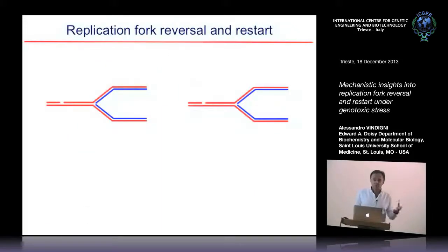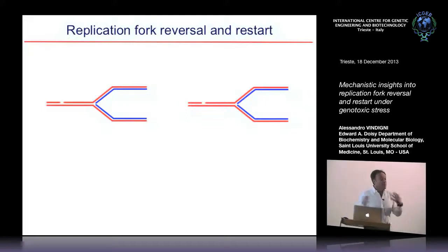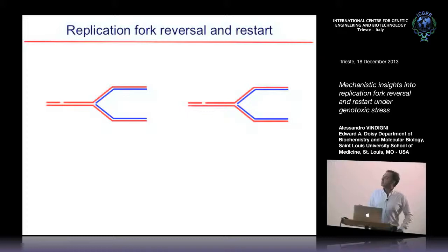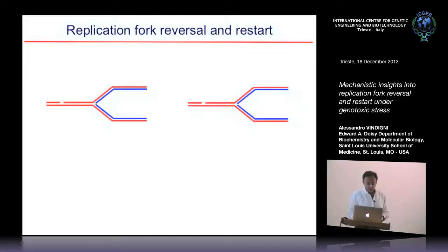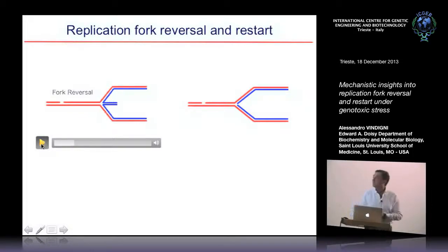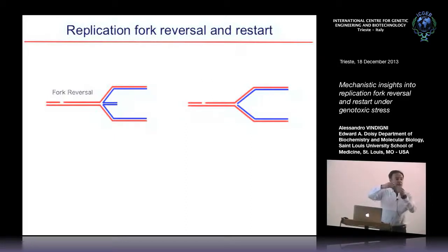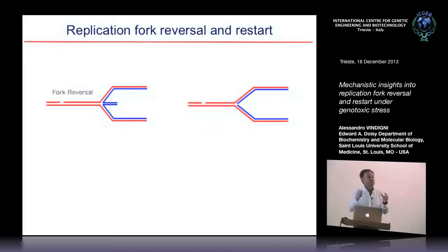The mechanism I will describe today is called replication fork reversal. This is a novel mechanism now emerging as a pivotal replication stress response. The idea is that if there is a lesion ahead of a replication fork, the replication machinery can sense the problem and instead of moving forward and colliding with the lesion, it undergoes fork reversal. This process does not require new DNA synthesis — it simply involves peeling off the leading and lagging strands, which are complementary and pair together to form a structure also called a chicken-foot structure.